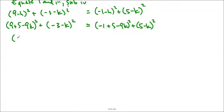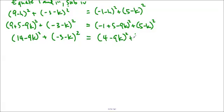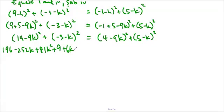So here we get 14 minus 9K squared, plus negative 3 minus K squared, equals 4 minus 9K squared, plus 5 minus K squared. And we expand this out, just like the last one. You can use your calculator, of course, to help you out. I did this in advance, so that's why I'm doing it so quickly. 9 plus 6K plus K squared.